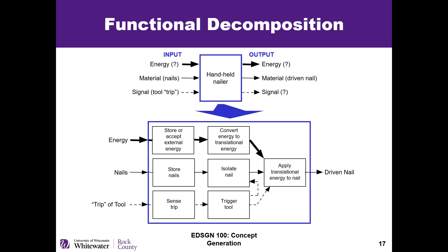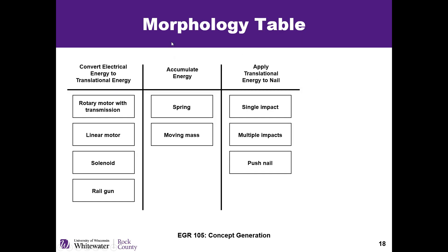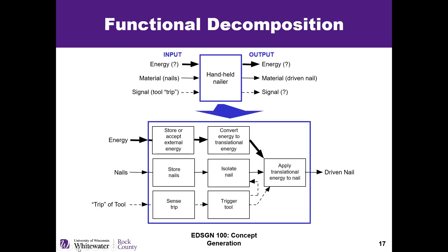We can take a nail gun and separate it out into its different components. On the input side we put inputs — those inputs would have different types such as energy, materials, or a signal. Then we have something happening in this black box, and then there are outputs: energy, material, and in our case our driven nail, and maybe some signal. So we have energy of some kind, some nails as our material going into the black box, and a trip tool.